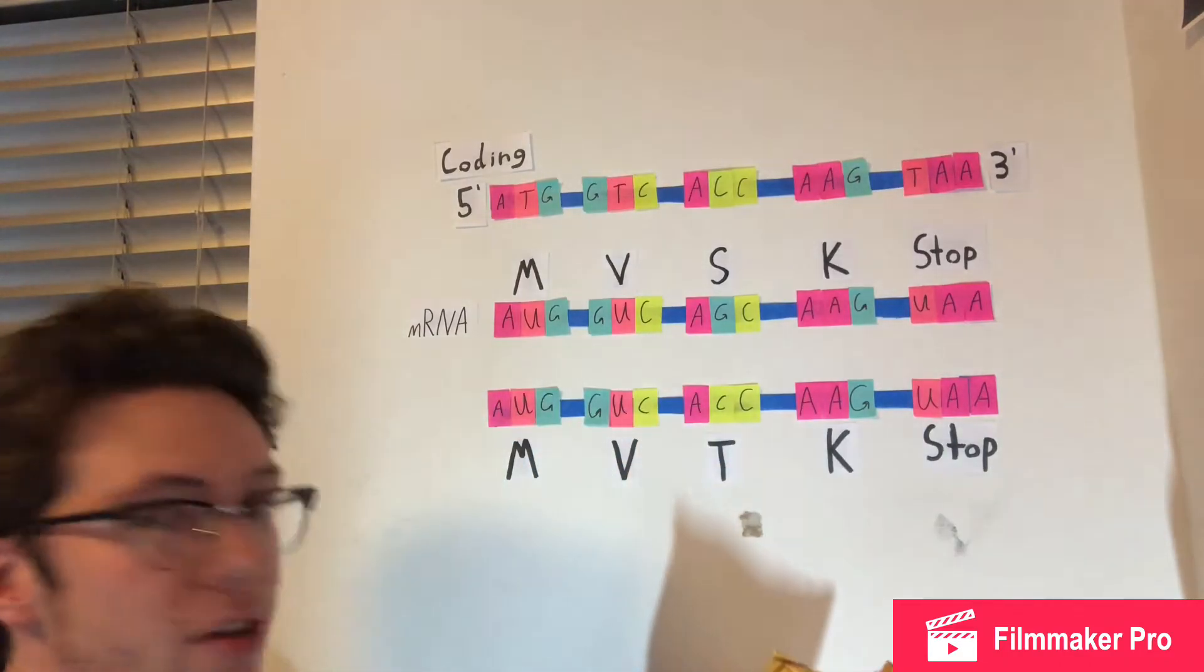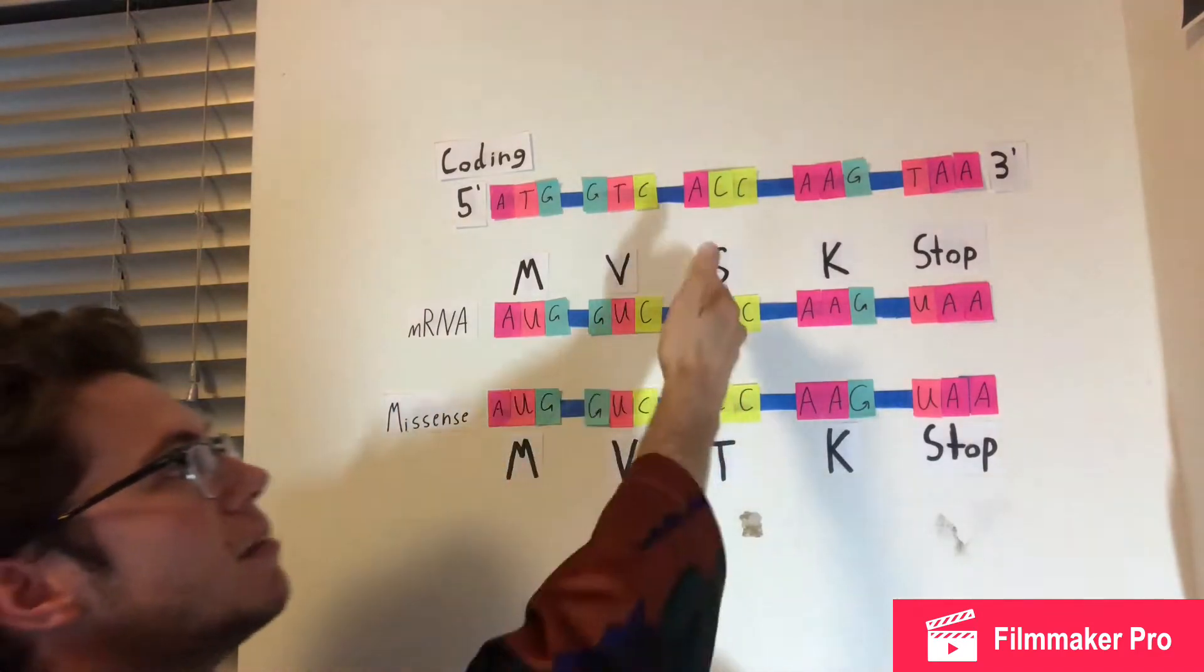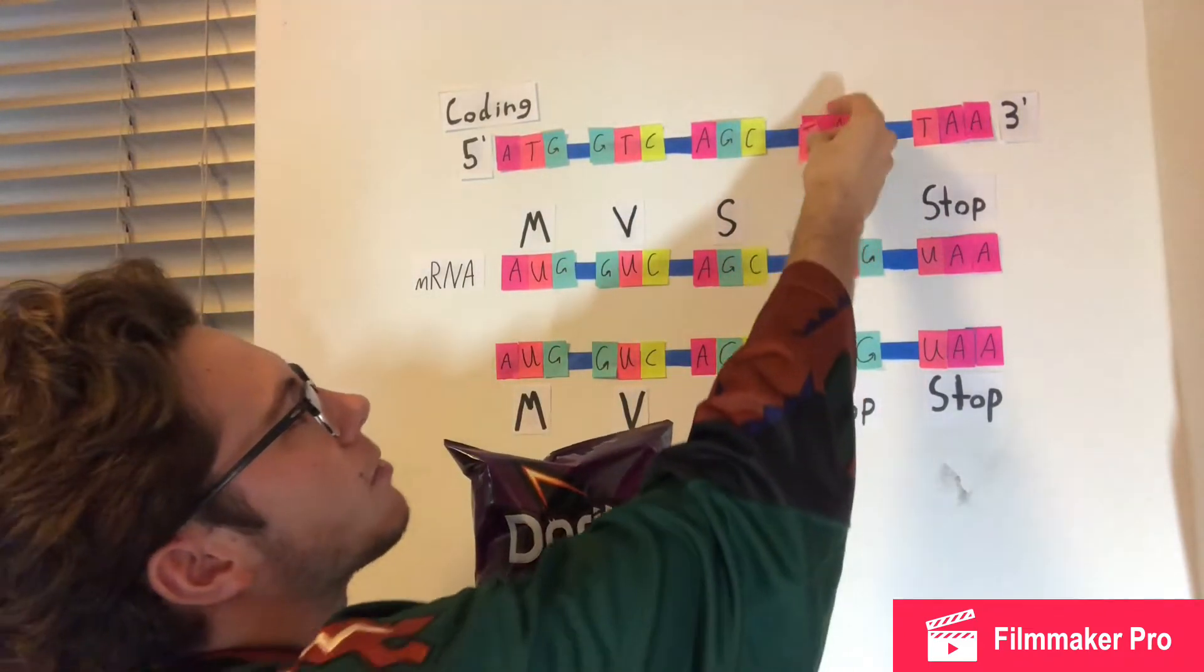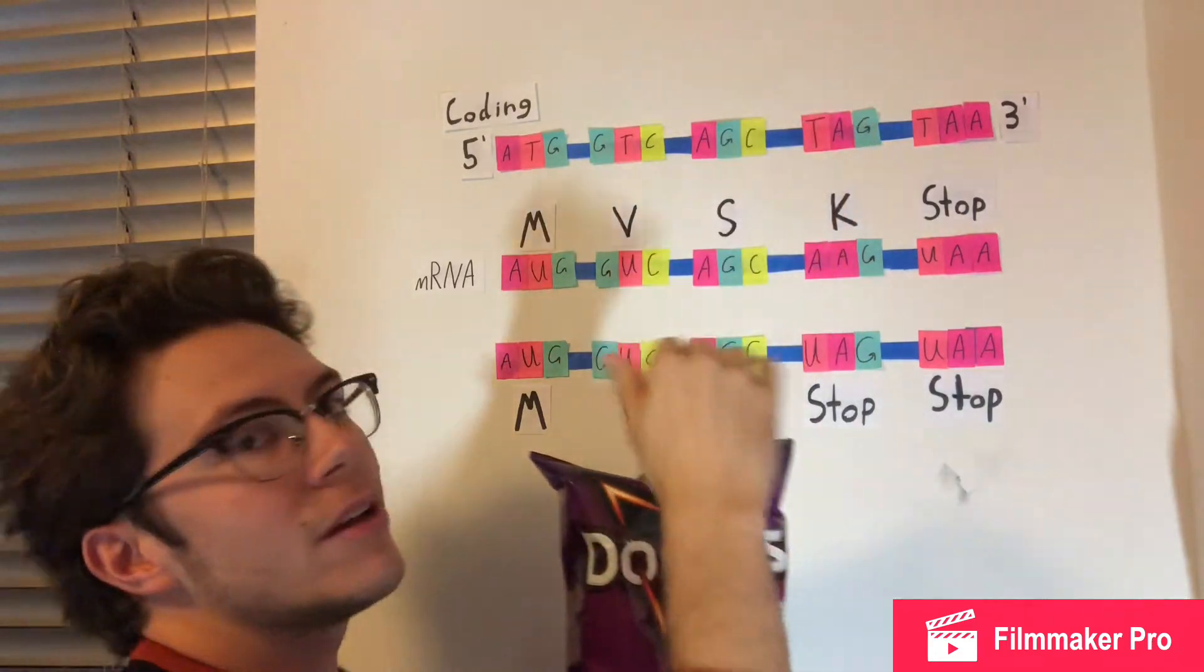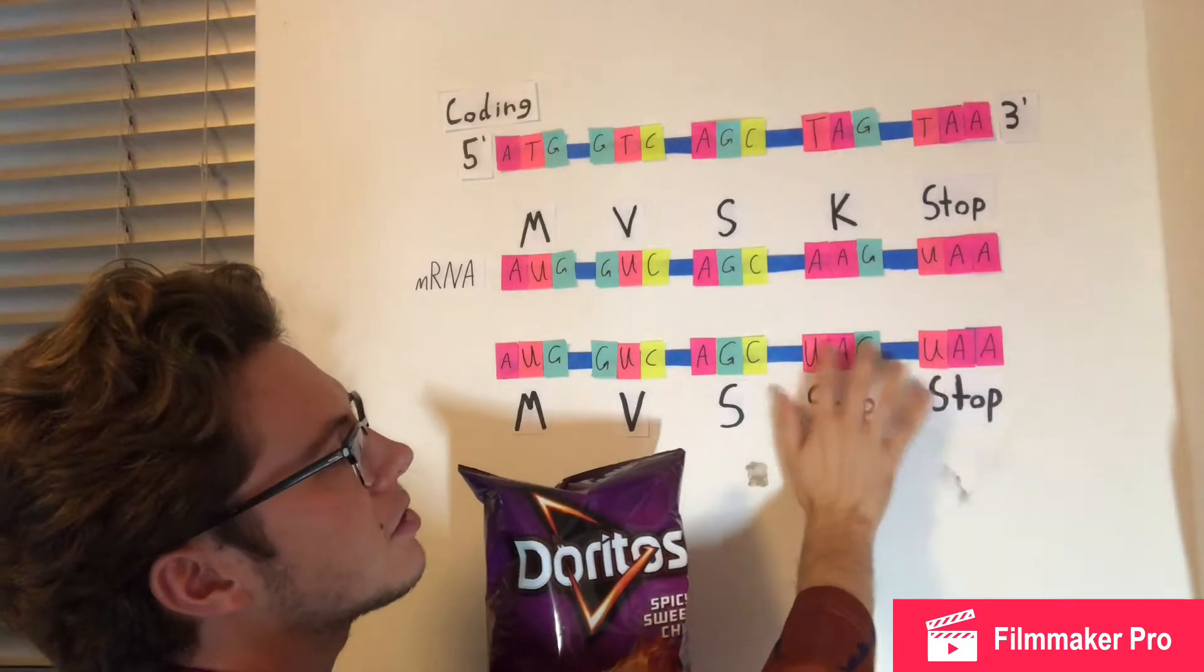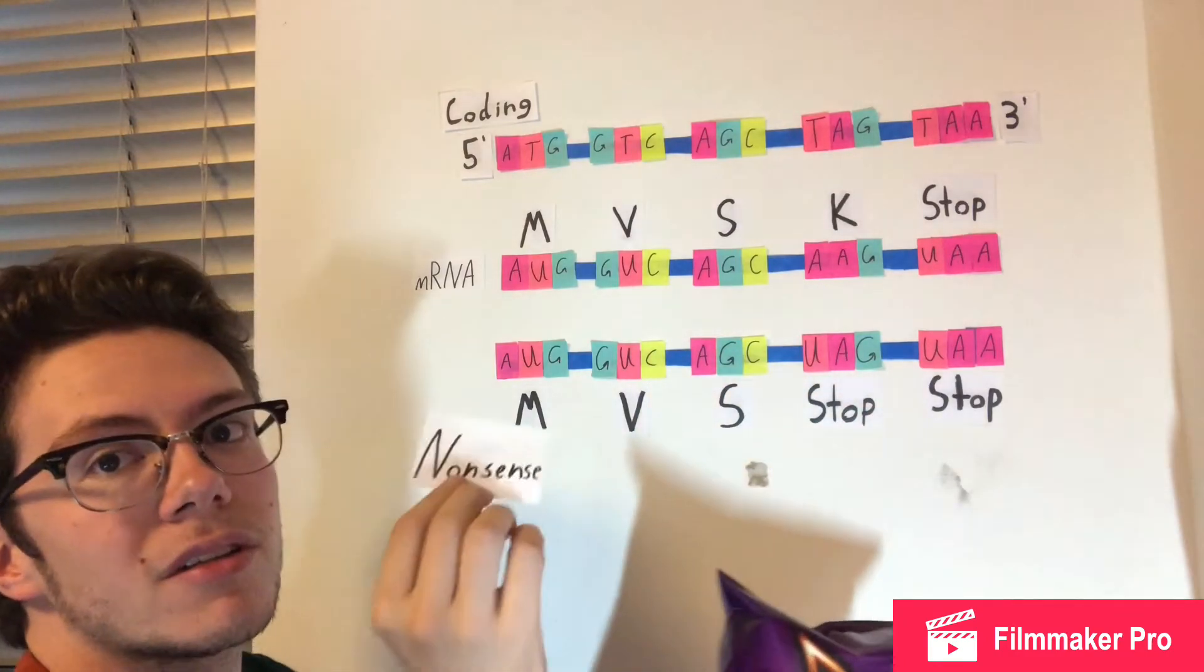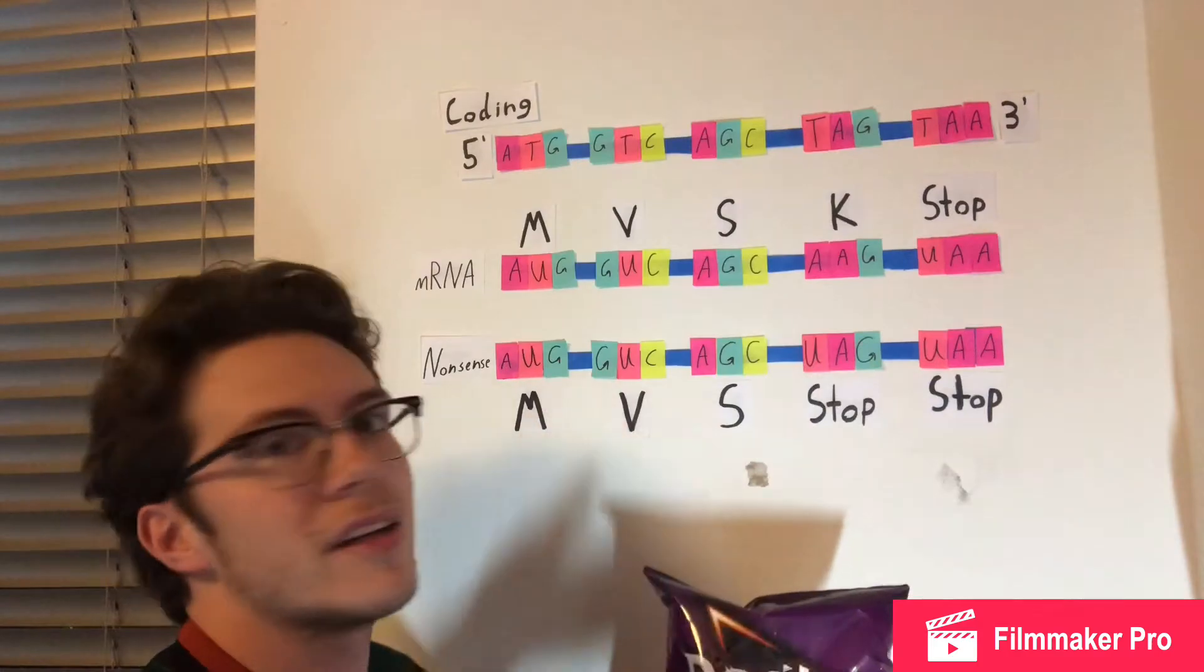Now if we wanted Doritos spicy sweet chili chips, the adenine in DNA right here would have to go through transversion to turn into a thiamine. The thiamine through transcription would turn into a uracil, which would change this codon into a stop codon, shortening the amino acid sequence. And this type of mutation is called a nonsense mutation since a codon was turned into a stop codon.